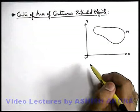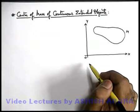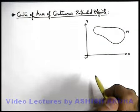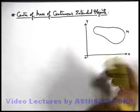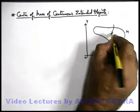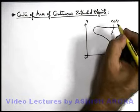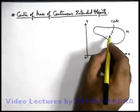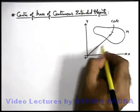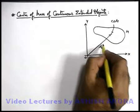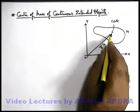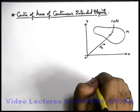If we are required to locate the position vector of center of mass of this body, say it is located somewhere here — this is the center of mass of this body — and we are required to find the position vector of center of mass, say it is r_c, then we need to find the value of r_c.